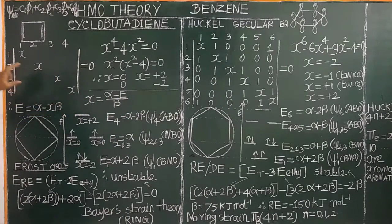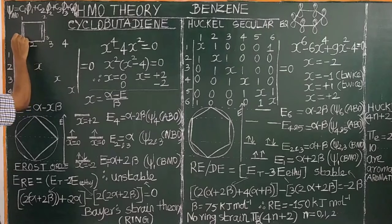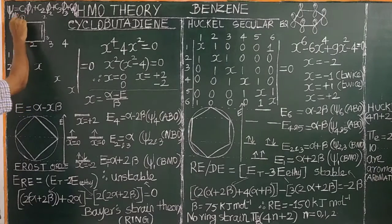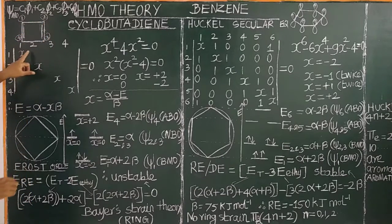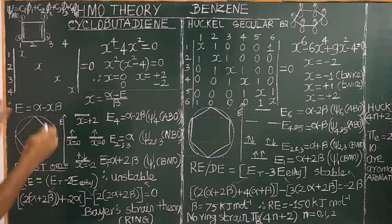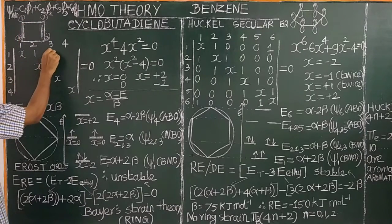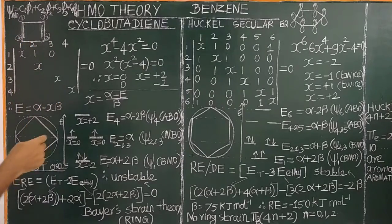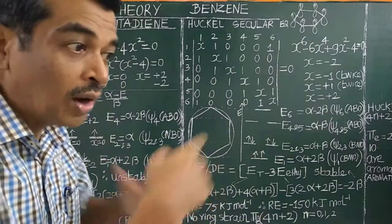The diagonal elements are filled first. If you look at carbon atoms 1 and 2, they are adjacent, so the element is 1. Carbon atoms 1 and 3 are not adjacent, so the element is 0. In 1,3-butadiene, which is a linear molecule, carbon atoms 1 and 4 are not adjacent.